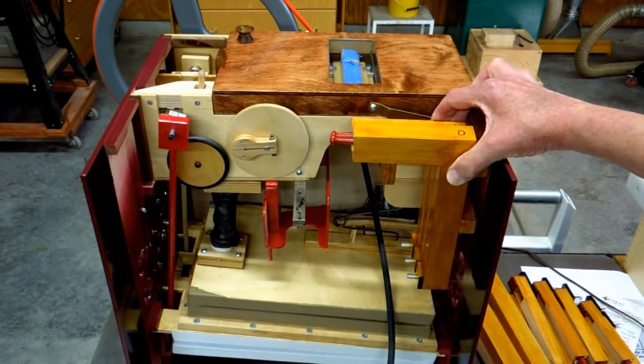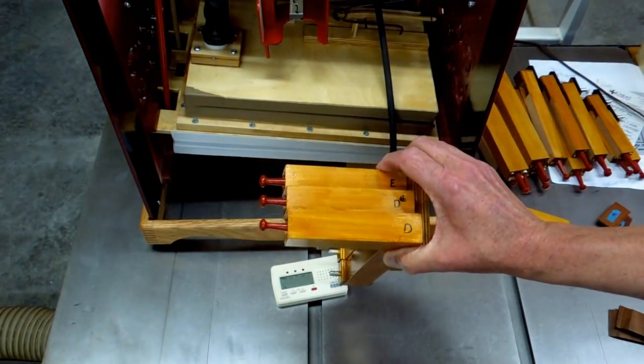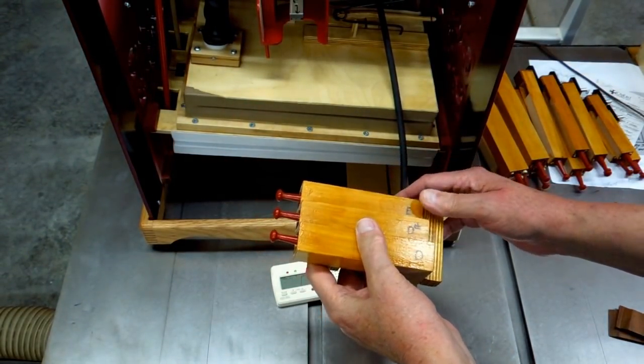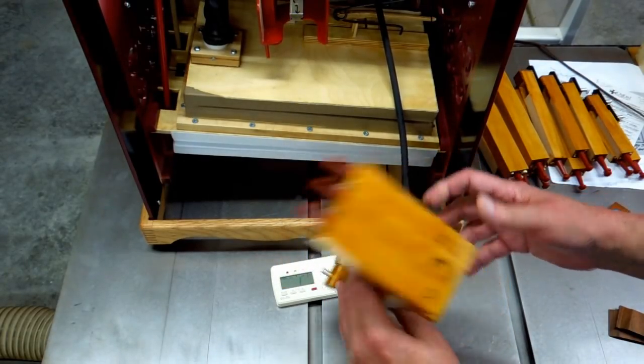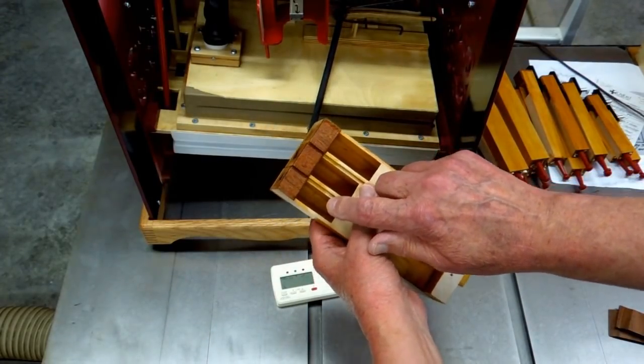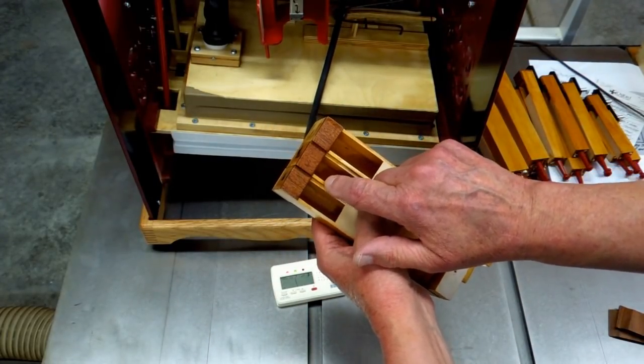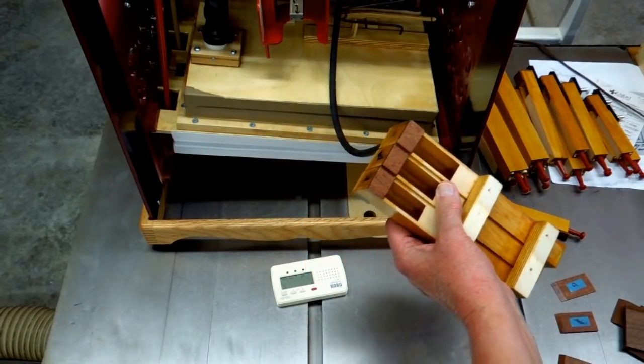These are three pipes that are going to fit on the inside of the organ case and these are D, D sharp, and E. Now these have already been voiced and tuned. I don't know if you can see this in the video but I've marked where the covers have to come up to. We'll start with D.